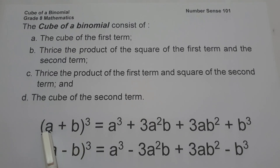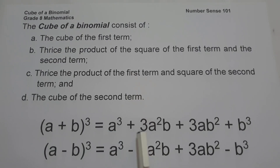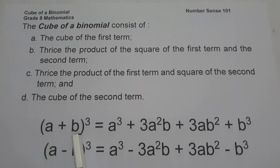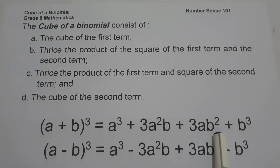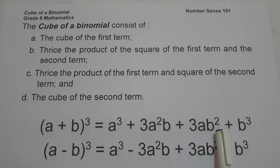As you can see symbolically, we have the cube of a plus b. To simplify: the first term is a cubed, the second term is 3 times the square of the first term times the second term — that is 3a²b. The third term is the constant 3 multiplied by the first term times the square of the second term — that is 3ab². The last term is b raised to 3.